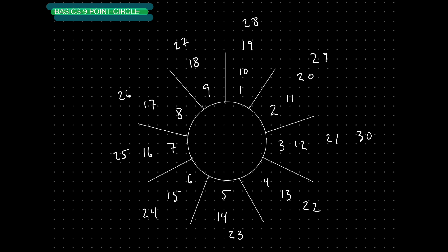So every positive whole number is going to land somewhere on one of these spokes. Like the number 5,122, the number 211, the number 389 — these numbers are going to eventually land somewhere on one of these spokes because I'm simply going around and around and adding one each time. So eventually if I keep going around, I'm going to get to 389 and it's going to be on one of these spokes.